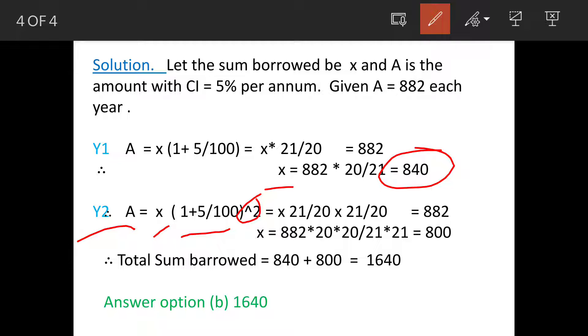So it will be x times 21/20 times 21/20, and this amount is 882 again. When we solve this, we'll get the value of x for the second year as 800. And for the first year, we got the value of x as 840.